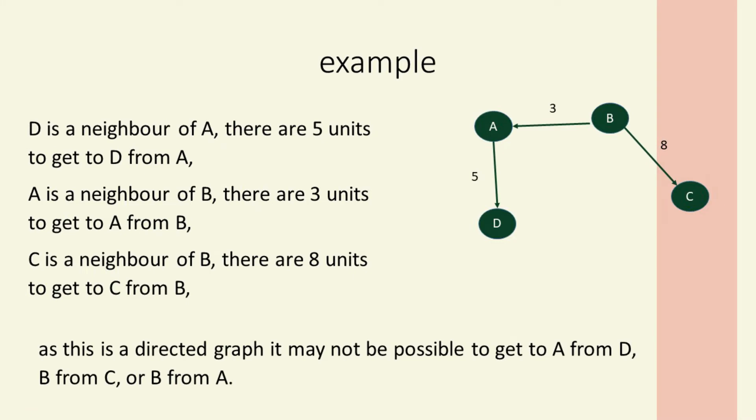In a directed graph, we can see that D is a neighbor of A and there's five units to get from A to D. Or if we want to go from B to A, there's three units. Or from B to C there's eight units. Now this is directed, so we may not be able to get from D to A or from A to B or C to B. That's the point of it being directed.